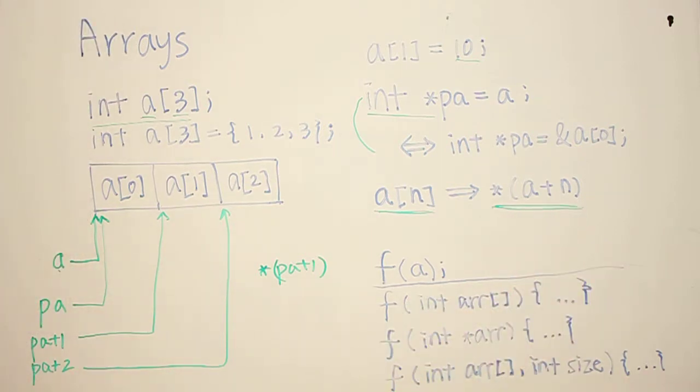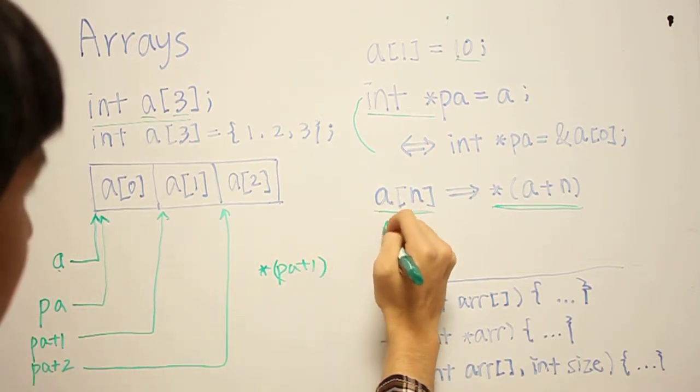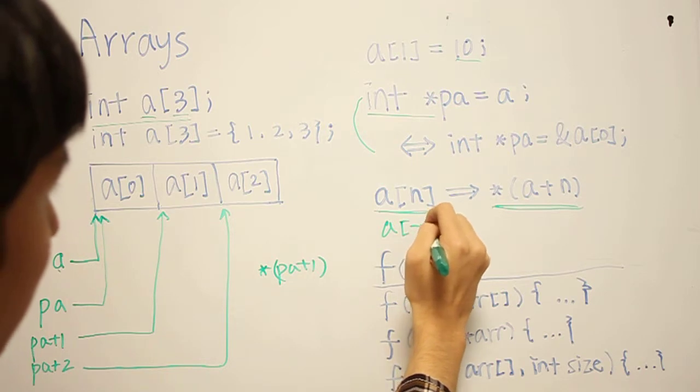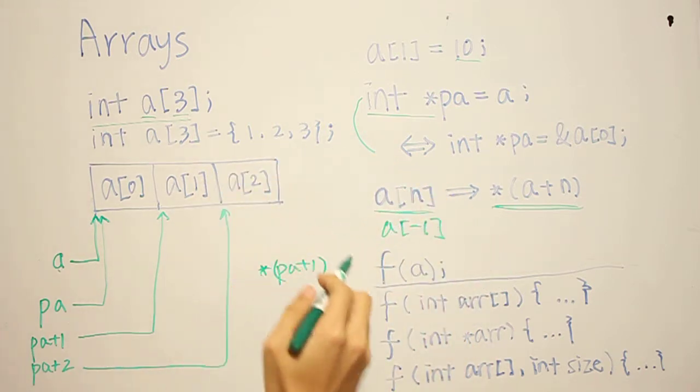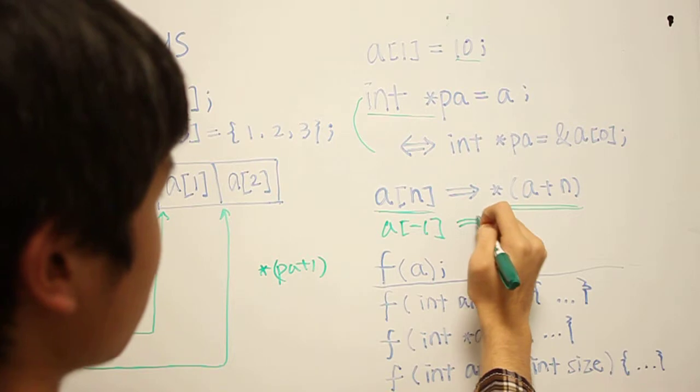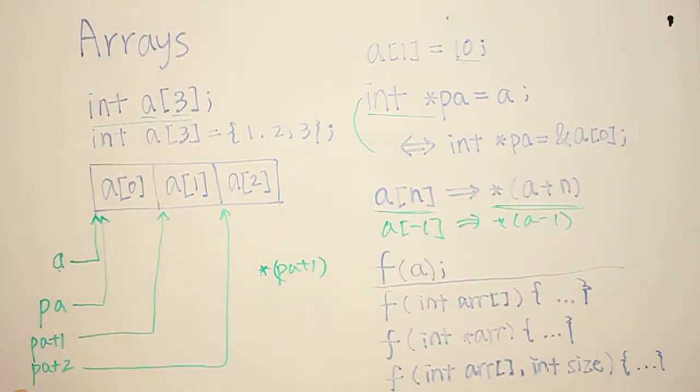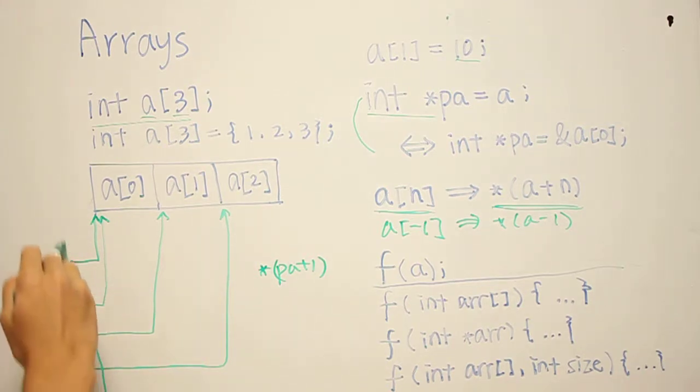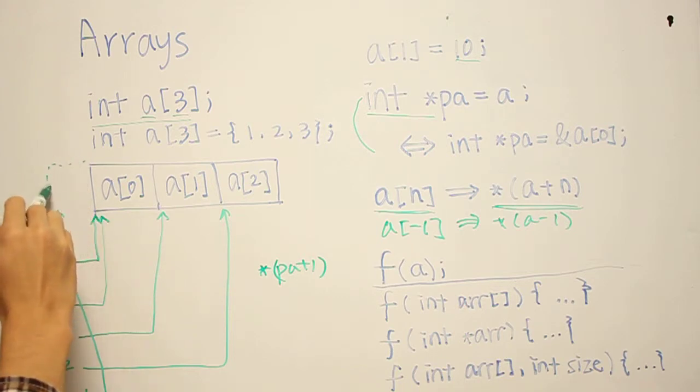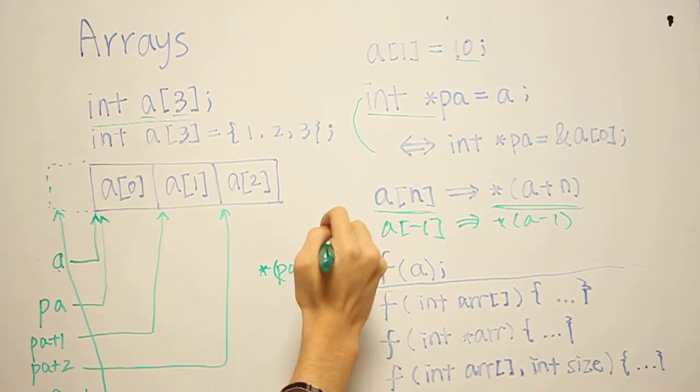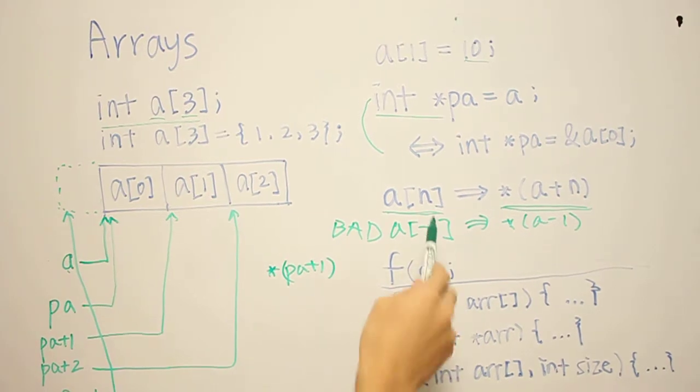One interesting thing you can do, or more like a hack, you can also do a bracket negative 1, which doesn't really make sense. What happens there is it just simply converts it into this expression, A minus 1, and so A minus 1 will point to the element before the first element. So this is bad. You don't want to do this. But yeah, you can just basically put anything in the brackets.